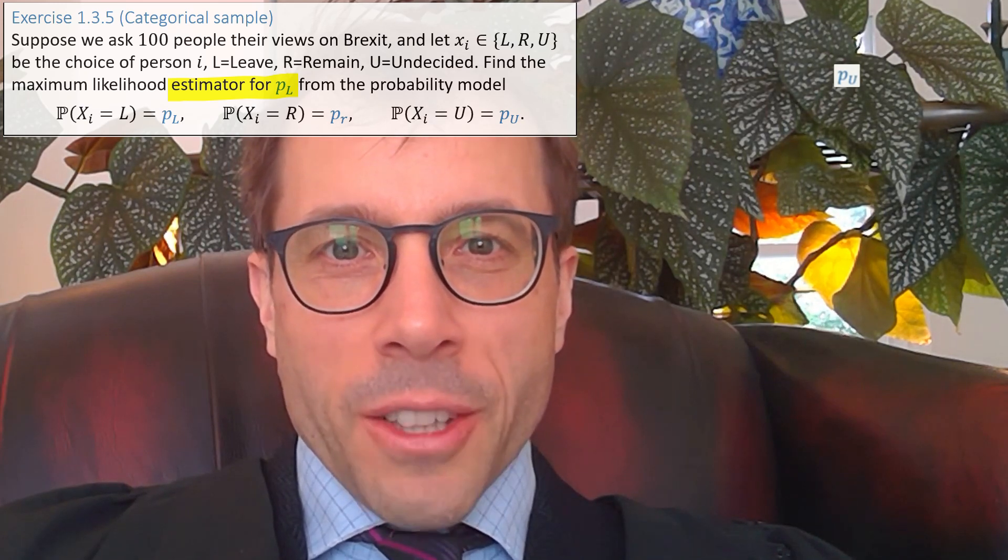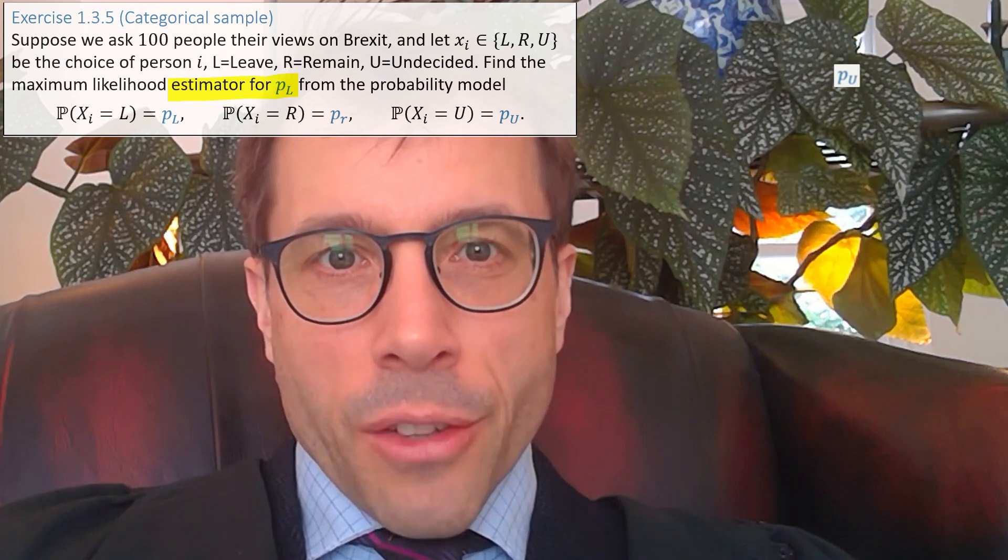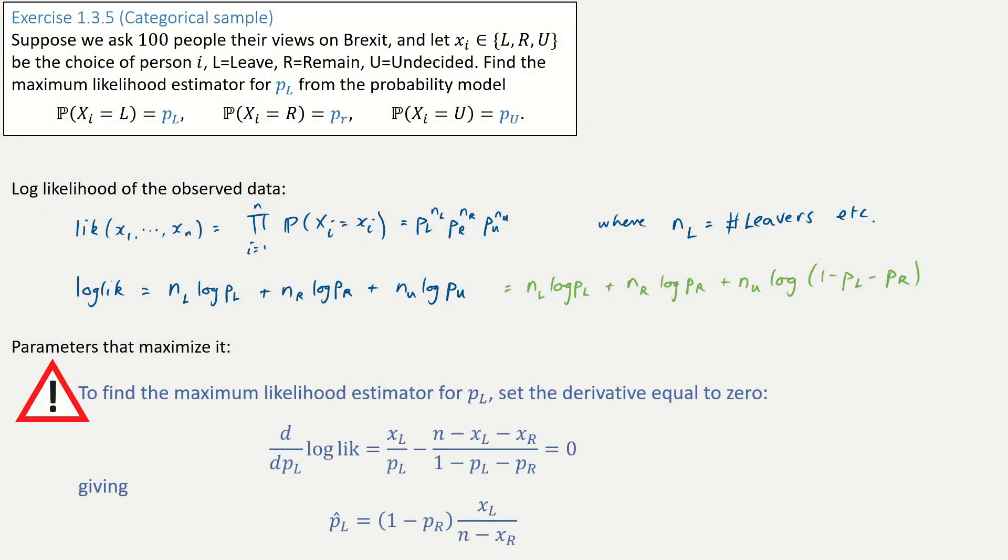The crucial thing about this problem, about any problem with multiple parameters, is the third rule of maximum likelihood estimation, which says you need to include all the parameters in your model when you do the maximization. It's very easy to miss this, especially when the question tries to lead you astray like it does here. It says find the estimator for PL, but even though we're only trying to find one of them, we still have to maximize over all the unknown parameters, and then we just throw away the ones we're not interested in. To really understand why this matters, let's see what happens if we ignore the third rule. Let's see what goes wrong if we just do the maximization over PL. This is what we might do. We differentiate our log likelihood with respect to PL, find where the derivative is equal to zero, and solve for PL. Easy!